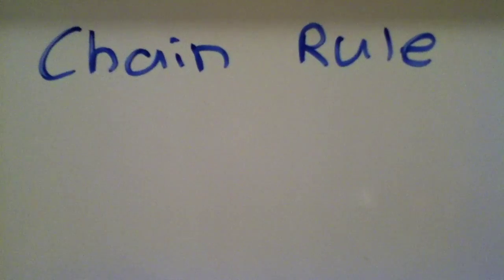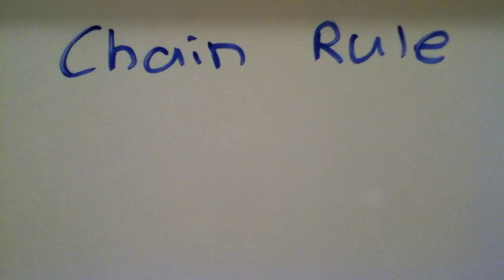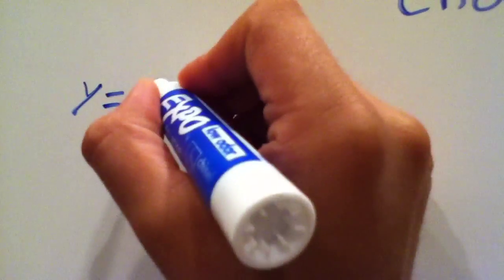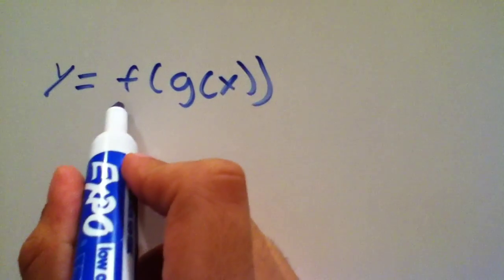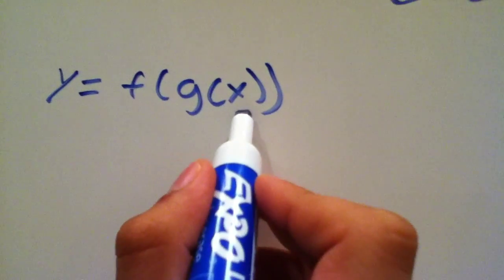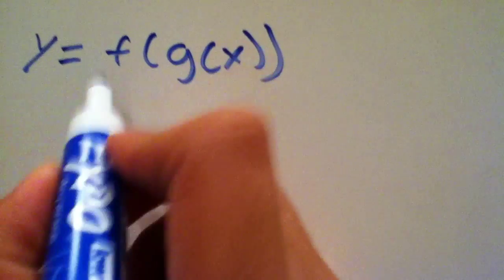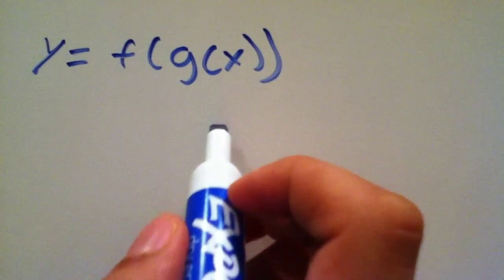Let's discuss the chain rule for differentiation. The chain rule has to be used when you have something that looks like f of g of x — a function on the outside and a function on the inside, so it's two functions, and f is being evaluated at g of x.